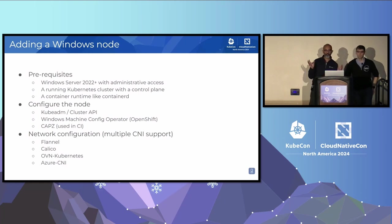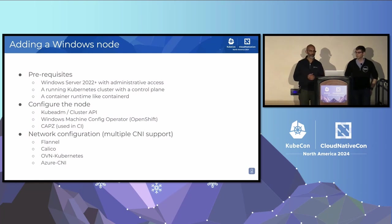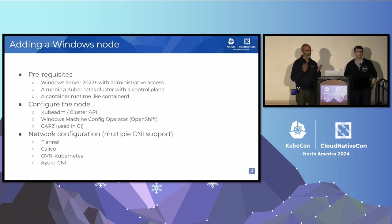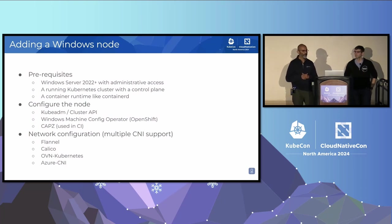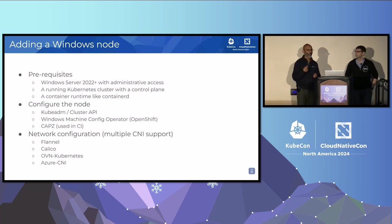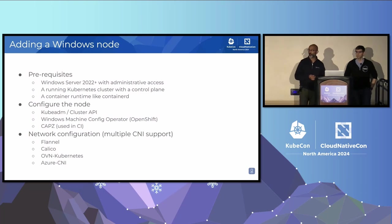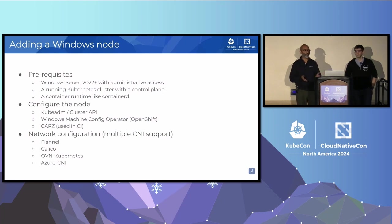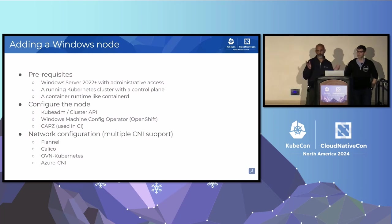Once you have your instance with all these prerequisites in place, you've got to configure the node. There are multiple ways of doing this. You can use a combination of kubeadm and Cluster API. If you're running on an OpenShift cluster, you can use the Windows Machine Config Operator. If you open a PR in Kubernetes, you'll run end-to-end tests against a Windows cluster — that cluster is brought up using CAPC, which is the Cluster API provider for Azure. So basically node configuration depends upon which provider you're using, and they will have recommendations on how to configure your node.